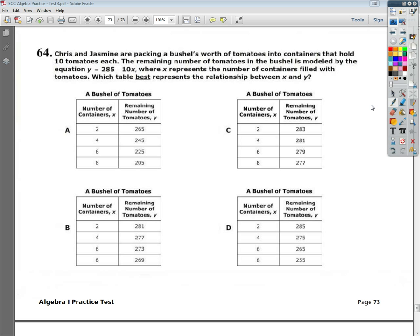The question says Chris and Jasmine are packing a bushel's worth of tomatoes into containers that hold 10 tomatoes each. The remaining number of tomatoes in the bushel is modeled by the equation y equals 285 minus 10x, where x is the number of containers and y is the number of tomatoes left. Which table best represents the relationship between x and y?